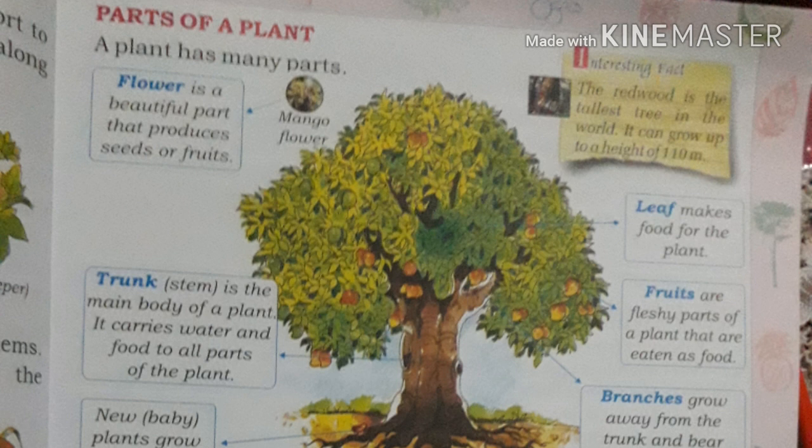Now let's look at the parts of a plant. The stem — in big trees it is called the trunk. It is the main part of the plant and it carries water and food to all parts of the plant.